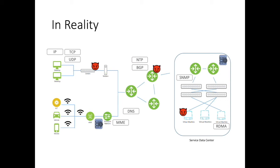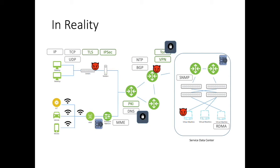To protect users from these attacks on the network, there are different security mechanisms developed along the way. For example, we have the widely used TLS and IPsec for transport security, PKI for web of trust, and TOR and VPN for anonymized communication. The next two papers in this section focus on security, analyzing DNS security and the TOR network security.